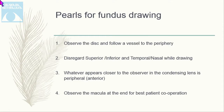First, see the disc and the vessels. Then remember: whenever you ask the patient to look up, you are seeing the superior part; when you ask the patient to look down, you are seeing the inferior part — and similarly for nasal and temporal. Whatever appears closer to the observer in the condensing lens is peripheral, meaning it is always anterior. This basic principle is very important, especially when you do lasers. The macula should be examined last to help with patient cooperation.